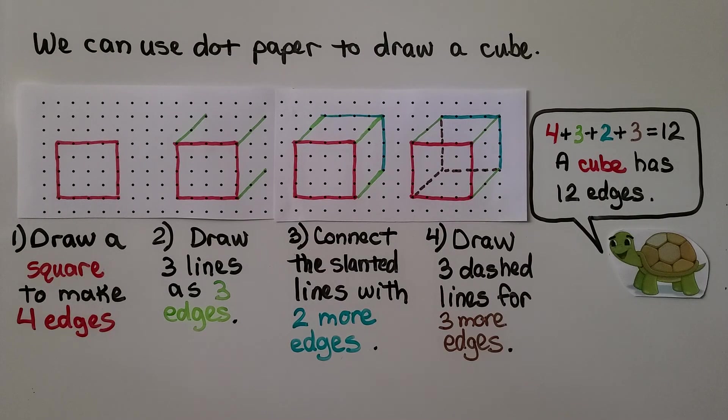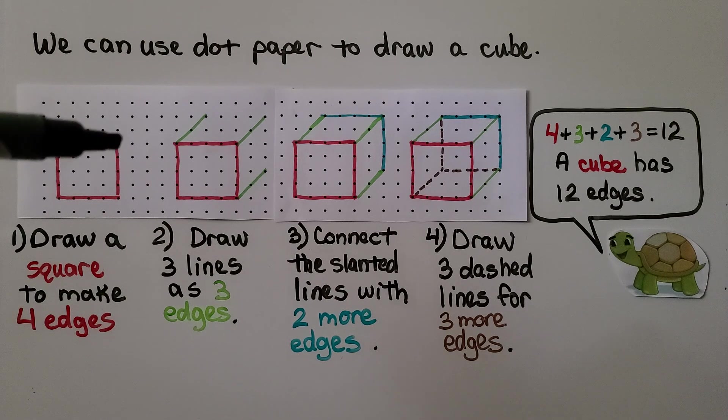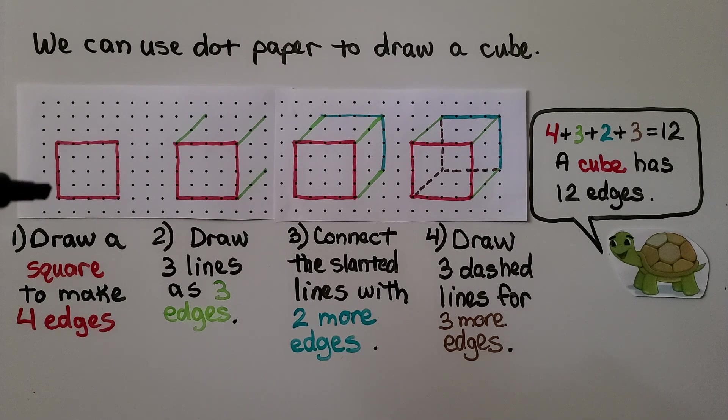We can use dot paper to draw a cube. The first thing we do is draw a square to make four edges. We want each line on the side to be the same length. So we use the same number of dots all the way around to make four edges.